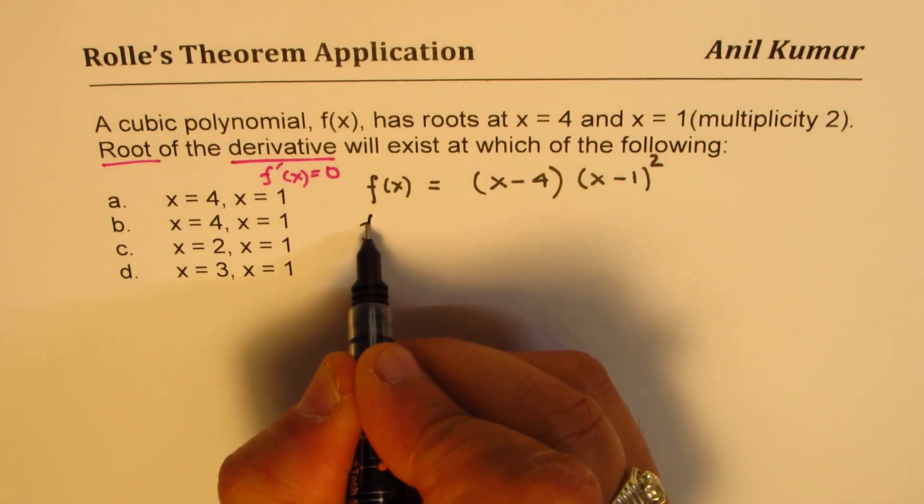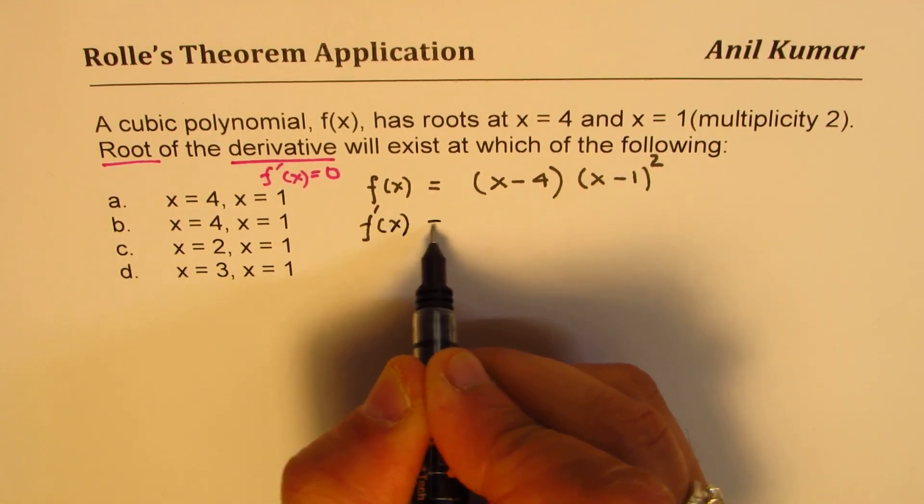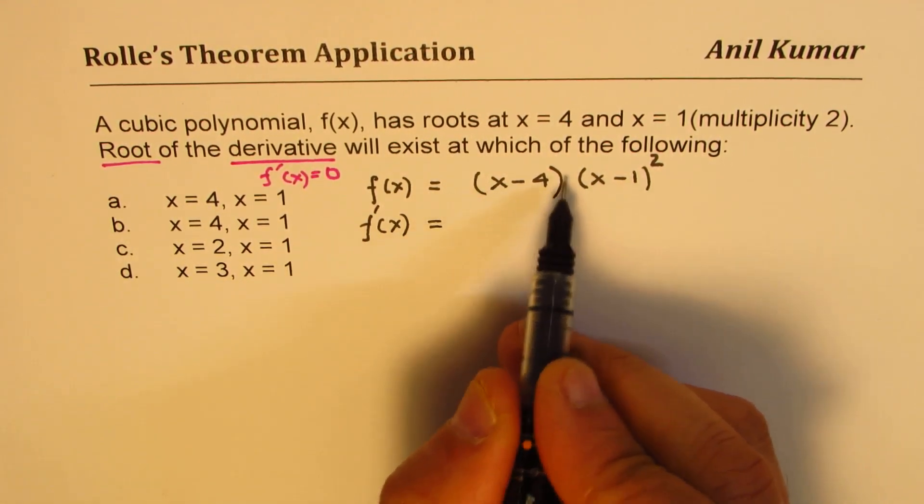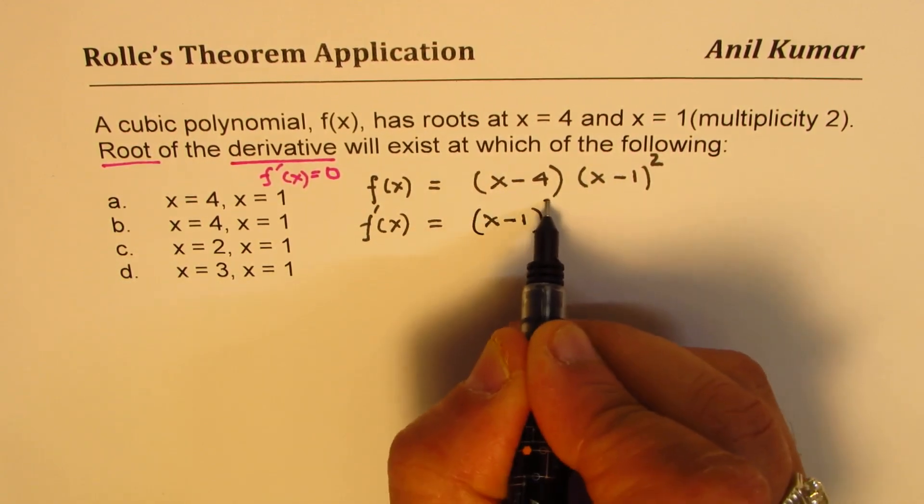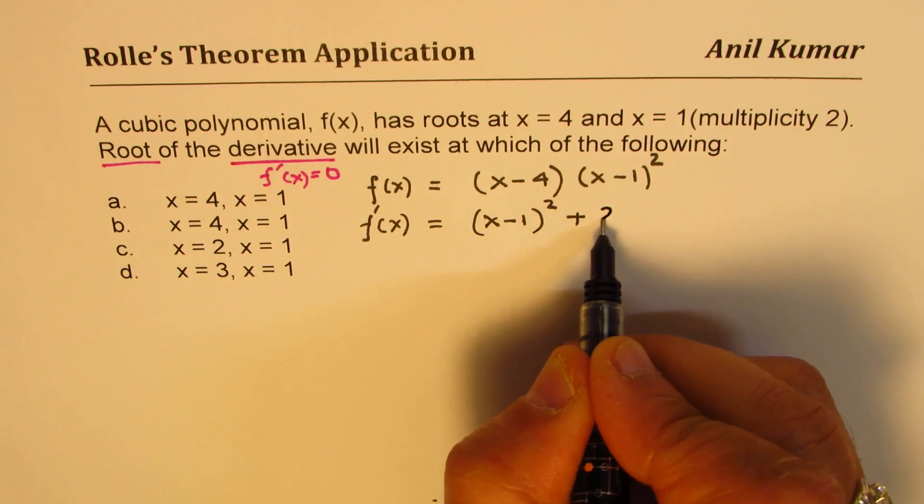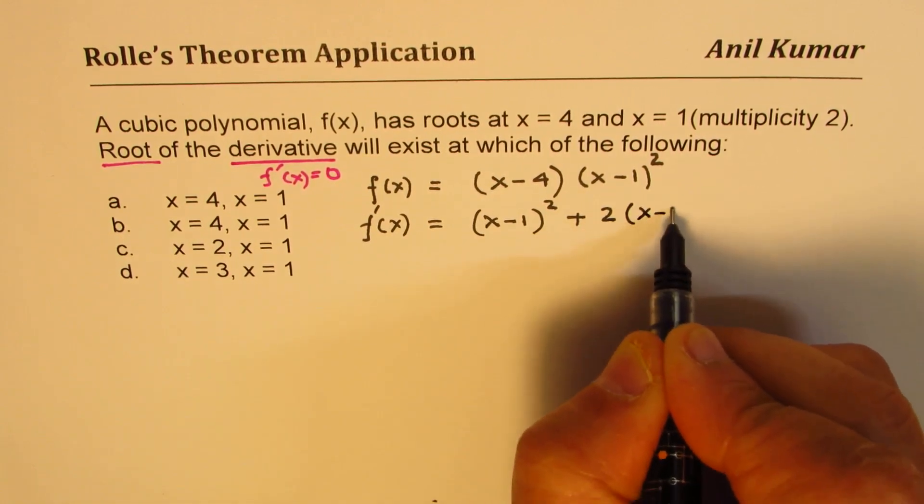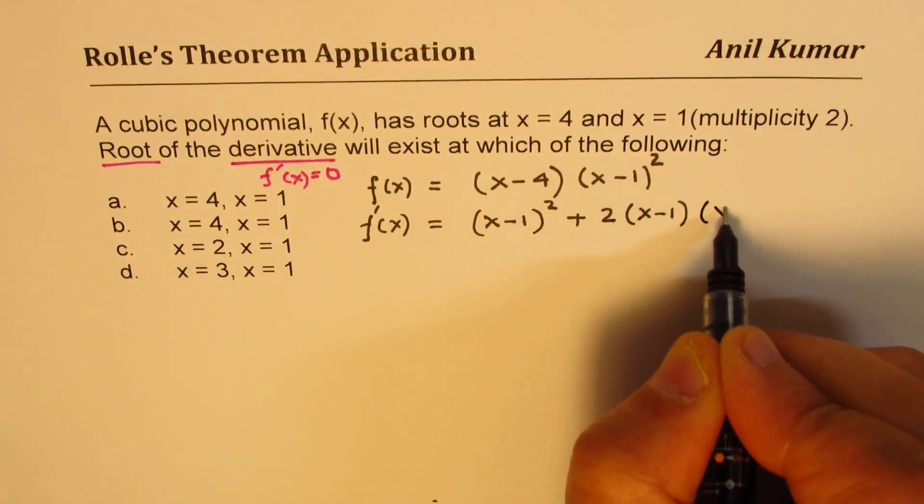So what we get here is f'(x) equals to. We can apply the product rule. Derivative of this is just 1, so we get (x-1)² plus derivative of this will be 2 times (x-1) times (x-4).